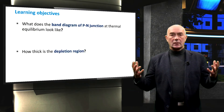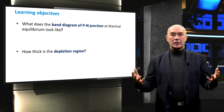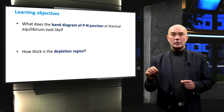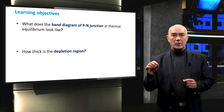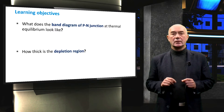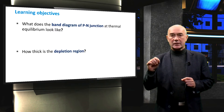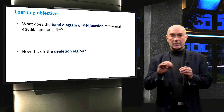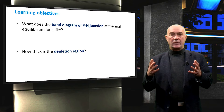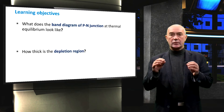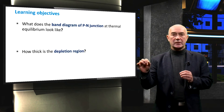The learning objectives of this video are as follows. After this video, you should know what a band diagram of a PN junction at thermal equilibrium looks like. Once that picture is clear in your mind, I will explain how to calculate the intensity of the electric field in the depletion region. Finally, we will use that calculation to determine the width of the depletion region.